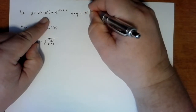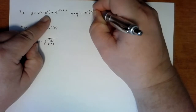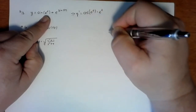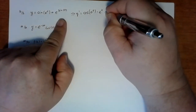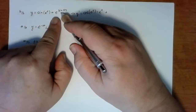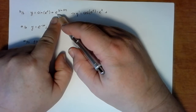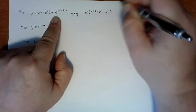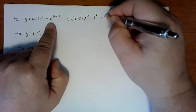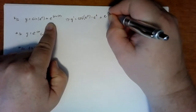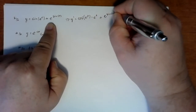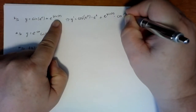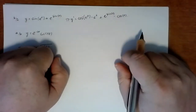We evaluate with the inside function still there, then multiply by the derivative of the inside function. Then we add the second term — the exponential function is the outside function and sine is the inside function, so we exponentiate that, leave the inside function there, and multiply by the derivative of the inside function.